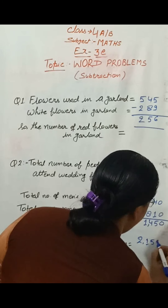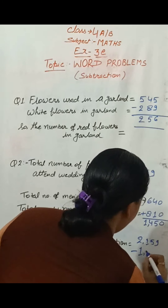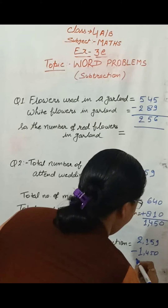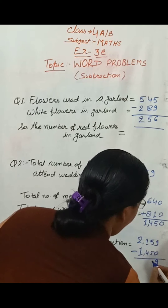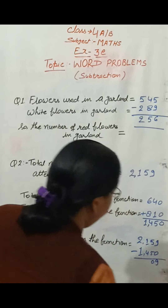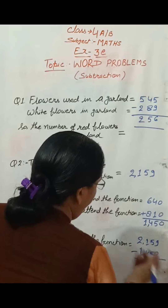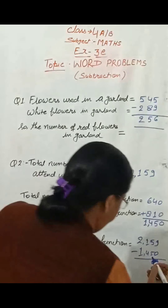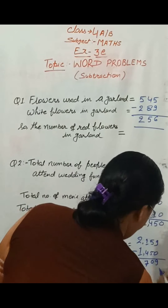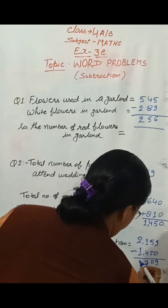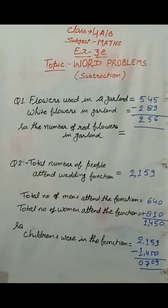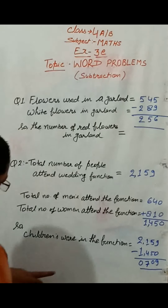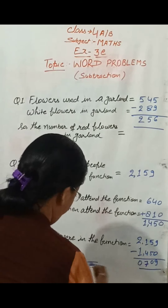Now we subtract 1450 from 2159: 2159 minus 1450 gives us 709. So 709 children attended the function. That's it for today — keep practicing!